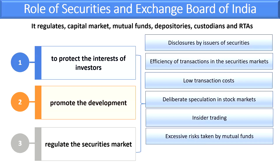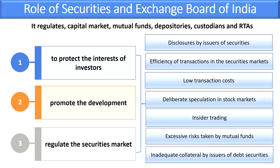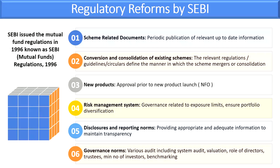SEBI also prohibits malpractices by mutual funds and inadequate collateral by issuers of debt securities. In India, many large companies issue debt securities, and it is SEBI's job to check whether their collateral is adequate. If anyone is issuing inadequate collateral, SEBI will not allow them to do so.